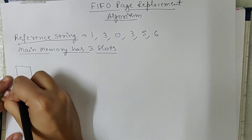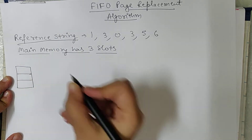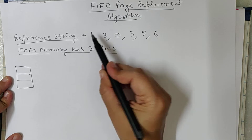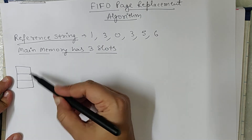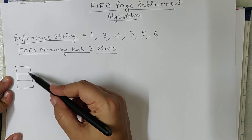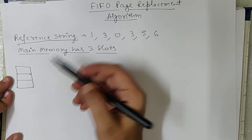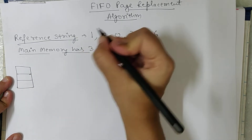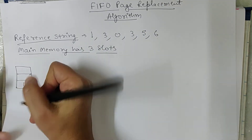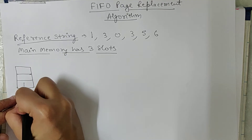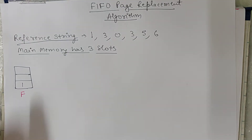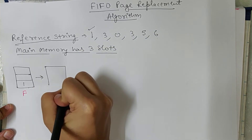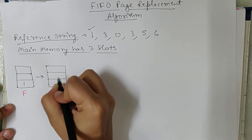Main memory has three slots. First, main memory is empty and CPU wants to execute page number 1. CPU searches for page 1 in main memory. Since page 1 is not present, a page fault occurs. We place page 1 inside main memory and mark it F — F denotes page fault. So one page fault has already occurred and page 1 is executed.